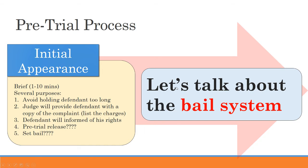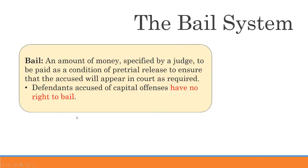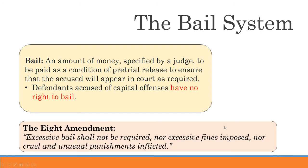The vast majority of pre-trial release comes in the form of bail. A bail is simply an amount of money specified by a judge to be paid as a condition of pre-trial release, to ensure that the accused will appear in court as required. The major consideration for qualifying for bail is flight risk — are you going to come back? A bail is an incentive for those with a medium flight risk, so that you come back. If you come back, you get your money back. The Eighth Amendment protects us from excessive bails.